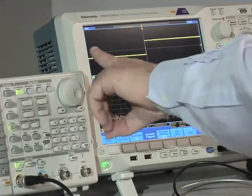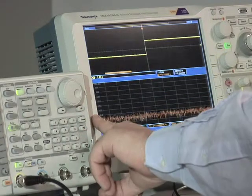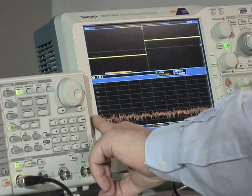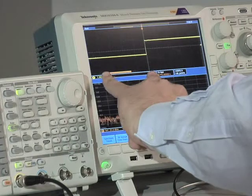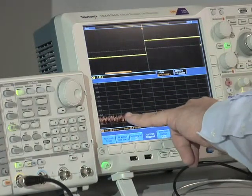So on the scope screen we have an analog trace, which is the power amplifier control line. We have an RF trace, which is the output spectrum of the power amplifier. And we have this bar indicating the spectrum time over which this spectrum is drawn.